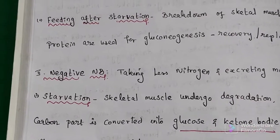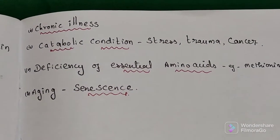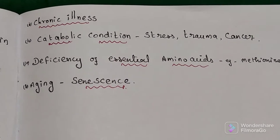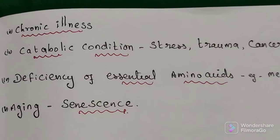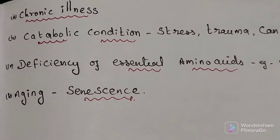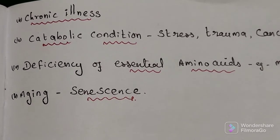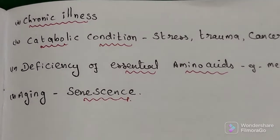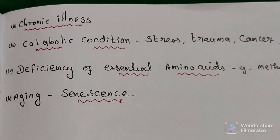The second condition causing negative nitrogen balance is chronic illness. It is a stressful situation, so protein degradation is ongoing — the person is using muscle proteins, and the amino acid nitrogen is converted into urea, so more urea goes out of the body. Other catabolic conditions like trauma and cancer, where there is catabolism or breakdown of skeletal muscle proteins, also result in nitrogen going out of the body as urea.